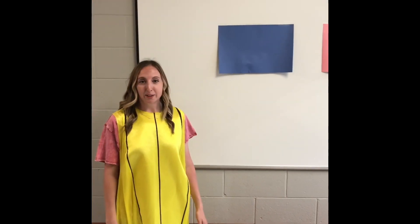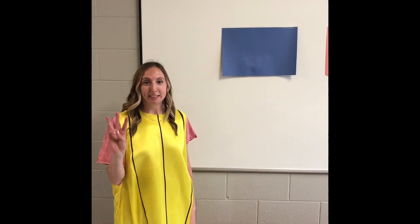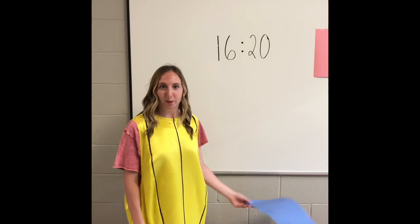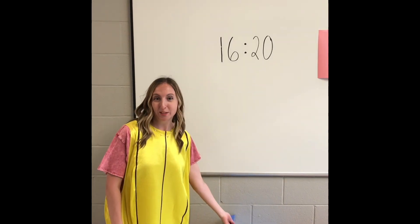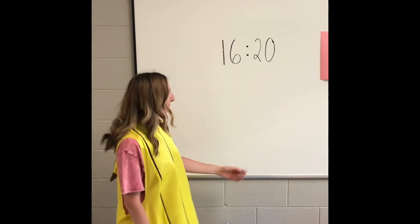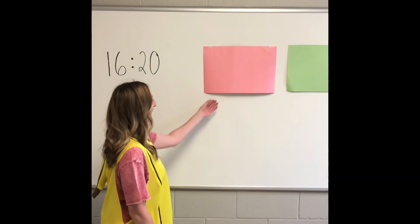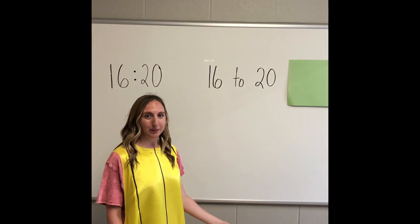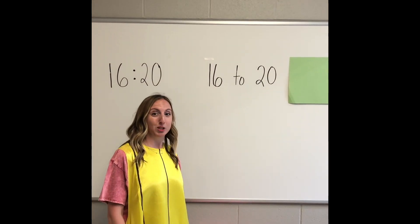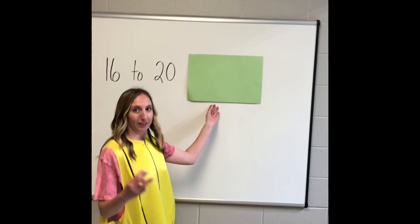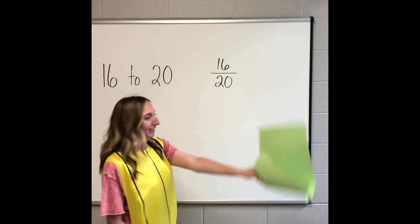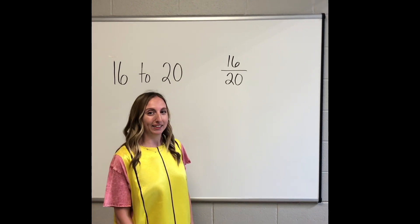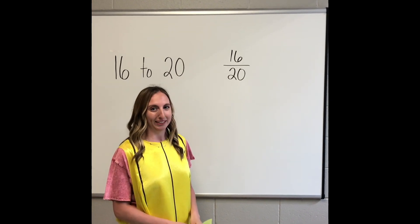A ratio can be written in three different ways. The first is with a colon: 16 to 20. The second is with the word 'to': 16 to 20. And the third is like a fraction, which you already know how to write: 16 over 20.